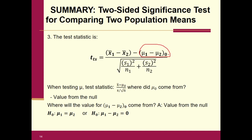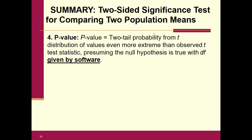The test statistic has a sub-zero notation. When testing mu, that sub-zero value came from the null hypothesis. Similarly, the value of mu one minus mu two sub-zero comes from the null hypothesis — and since the null hypothesis states mu one minus mu two equals zero, this value is always simply zero. So the test statistic gets simplified very quickly, and we'll largely allow software to compute it.